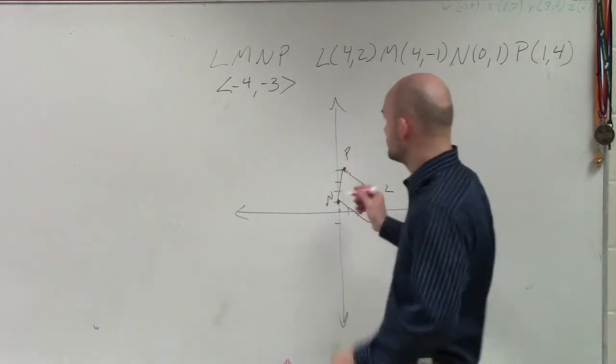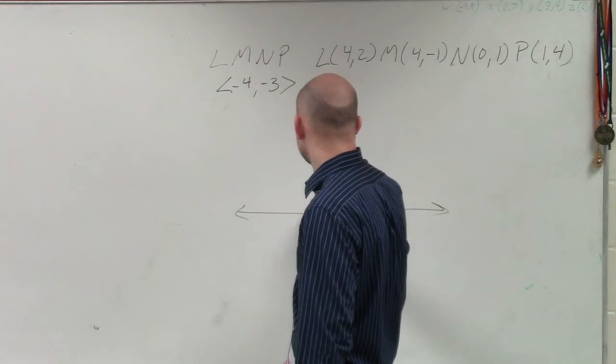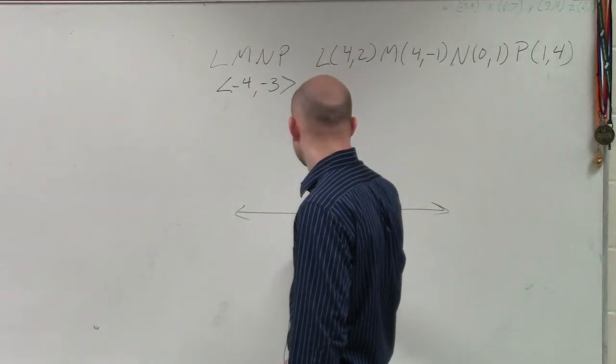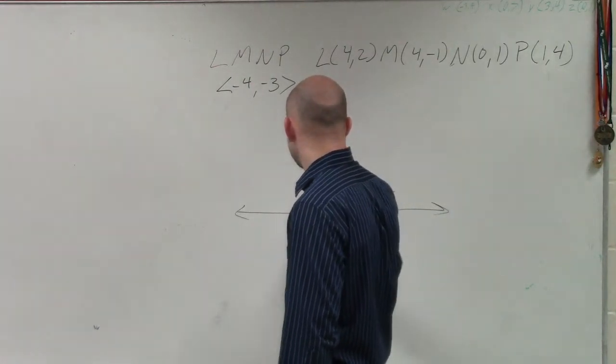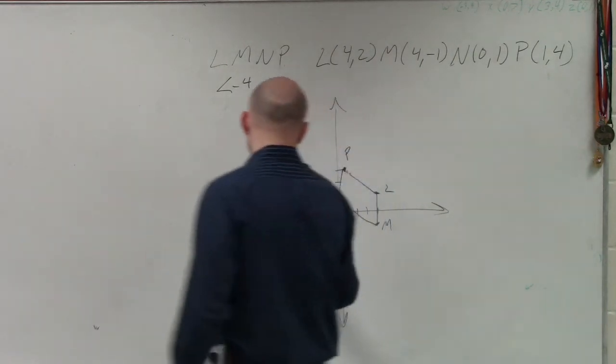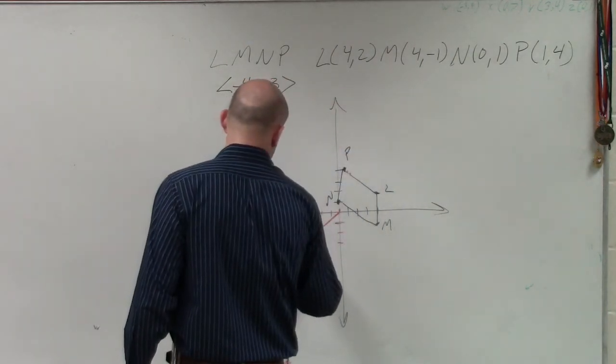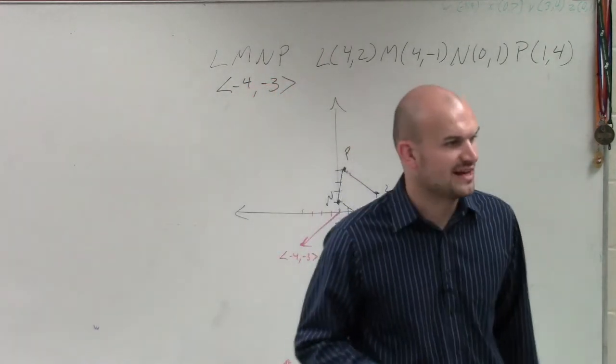Negative 4, 3 tells you to go to the left 4... 1, 2, 3, 4, down 3... 1, 2, 3. Sorry about that. That's the transformational vector. That is negative 4, negative 3. That's the transformational vector. Sorry, I read it. I read P. Transformational vector is right here.